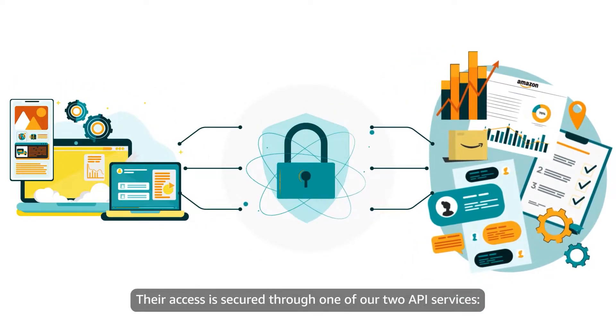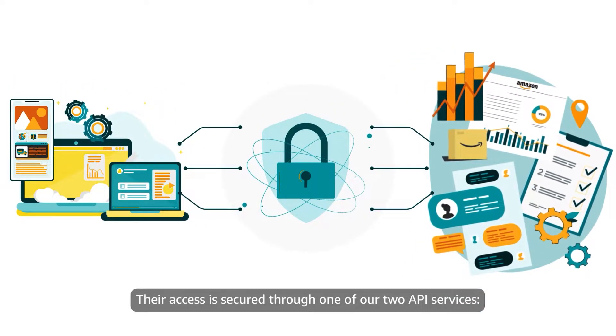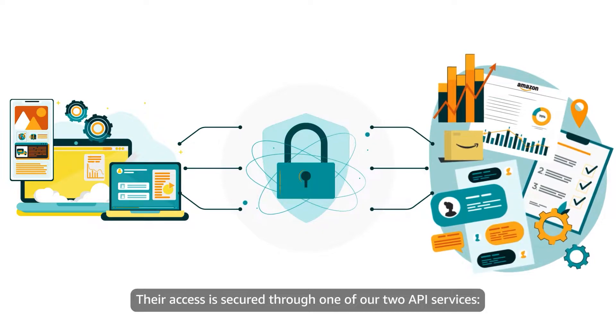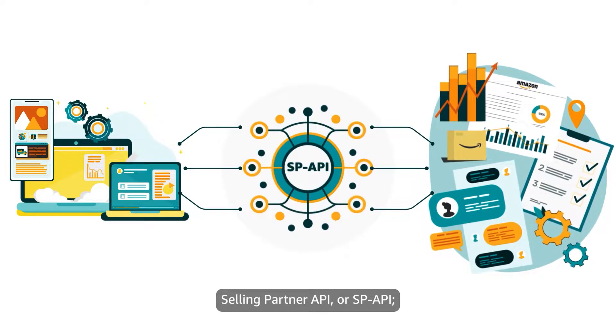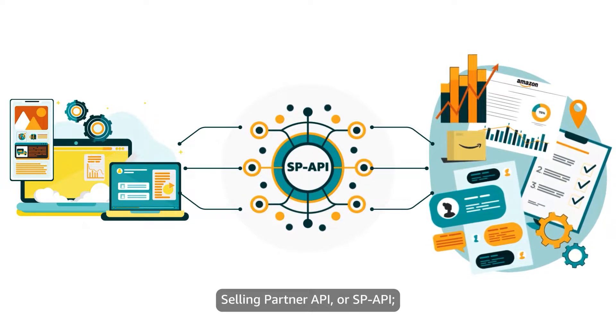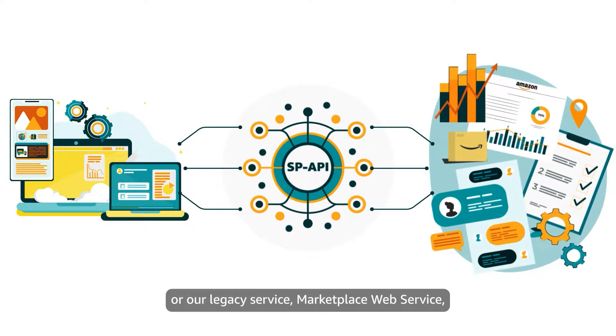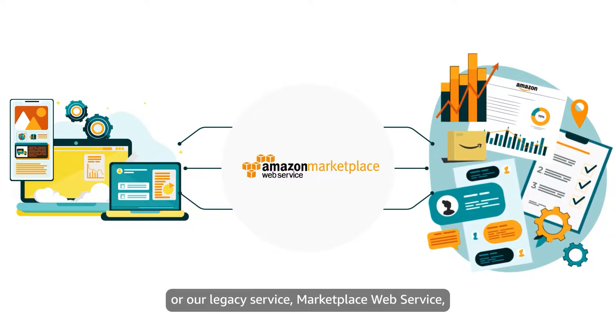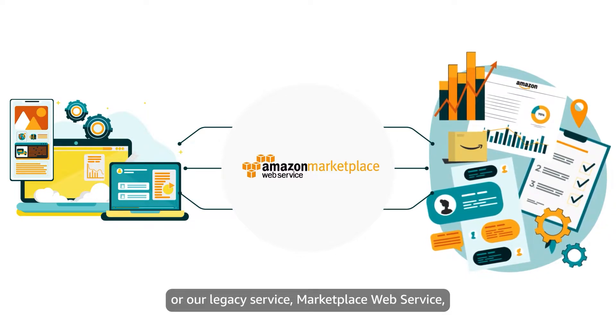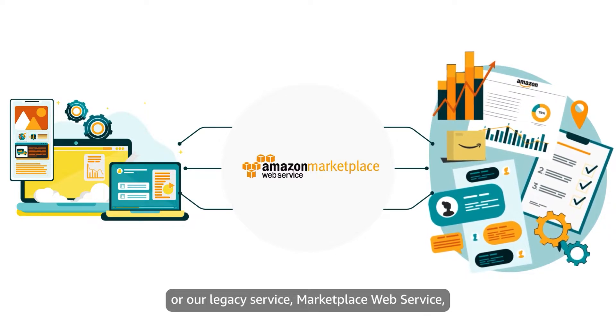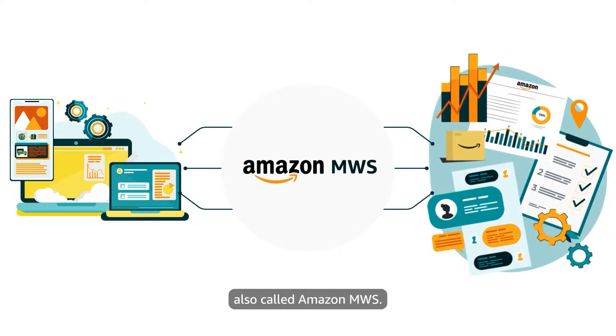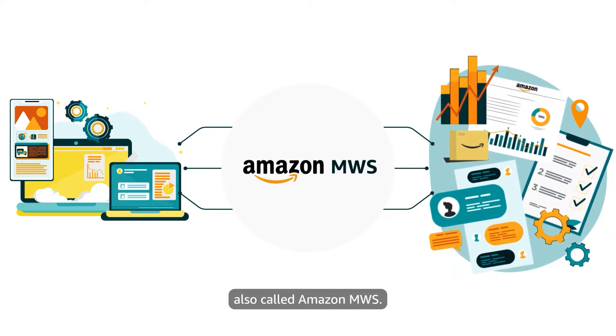Their access is secured through one of our two API services: Selling Partner API, or SP-API, or our legacy service, Marketplace Web Service, also called Amazon MWS.